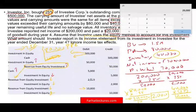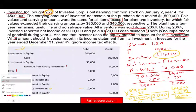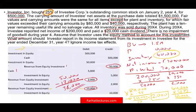Now let's answer the question. The income statement reports equity earnings of: $50,000 (our share of net income) minus $2,000 (PP&E fair value amortization) minus $10,000 (inventory fair value adjustment) = $38,000. That is the amount reported on the income statement.